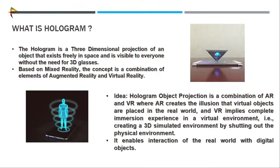A basic concept in AR and VR is the hologram — a three-dimensional projection where an object exists free in space. You can see this in old movies. With 3D glasses, you can easily know what object is present before you. Mixed reality combines augmented reality and actual reality. In hologram object projection, it's a combination of AR and VR, where AR creates digital objects placed in the real-world environment.